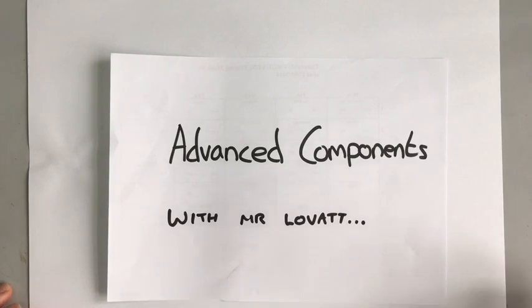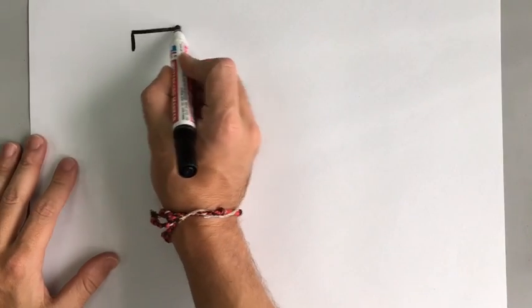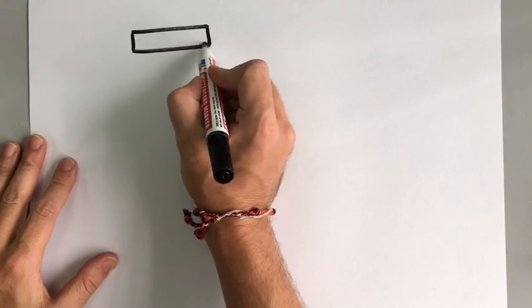This is a GCSE physics video on advanced electronic components. The first component that we're going to talk about is a thermistor. We mentioned it briefly in our last video.